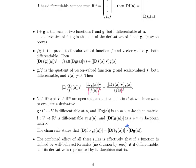So the combined effect of all these rules is effectively that if a function is defined by well-behaved formulas, no division by zero, no weird discontinuities, then it's differentiable and its derivative is represented by its Jacobian matrix.